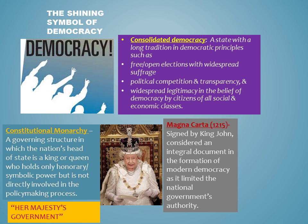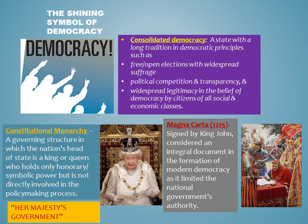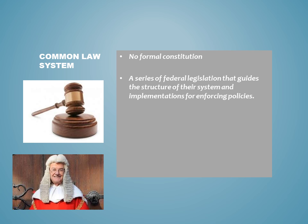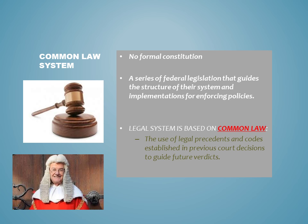The UK really became a shining symbol of democracy with the signing of the Magna Carta back in 1215, one of the first documents in world history in which the government gave up some of its authority to create a more democratic and prosperous society. Though the United Kingdom does not have one formal constitution, it does have a series of federal laws, both statutory and administrative, that guide its structure and its overall policymaking processes. The UK legal system is based on the idea of common law, which uses old legal precedents and codes that have been long-withstanding to help hold up new legal terms.